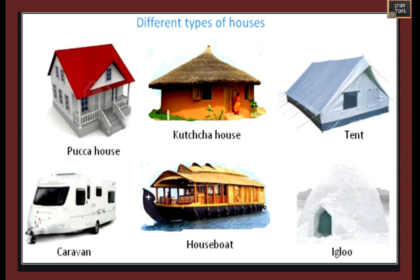These are the different types of houses: paka house, kacha house, tent, caravan, houseboat, and igloo. Paka house is the permanent house made from cement and bricks. Kacha house is made from mud. Tent and caravan are temporary houses. Houseboats are seen in water areas like Kerala, and igloos are seen in snow areas.